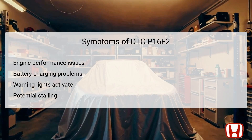The symptoms associated with DTC P16E2 can vary, but generally include engine performance issues, which may manifest as reduced power or irregular operation. Battery charging problems may arise, causing the vehicle to have difficulty starting or maintaining adequate electrical power for accessories. Additionally, warning lights on the dashboard may activate, providing visual clues that there is an underlying issue. In some cases, the vehicle might experience potential stalling during operation due to the malfunctioning communication chain between the PCM, alternator, and battery sensor. Attention to these symptoms is crucial, as they often prelude more severe issues if left unaddressed.